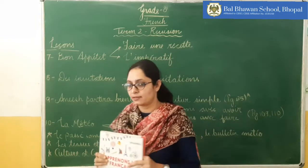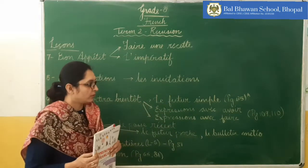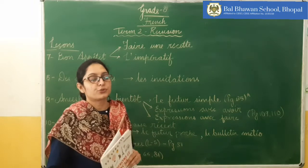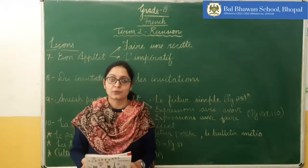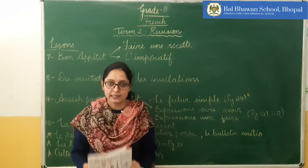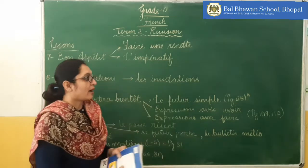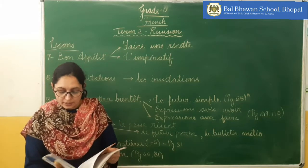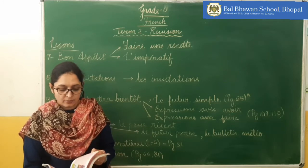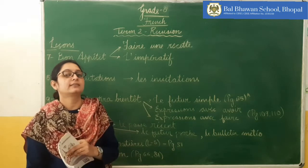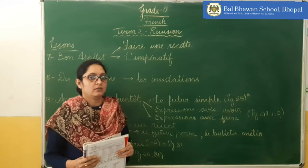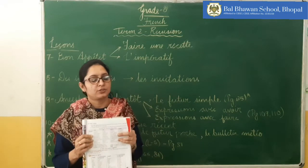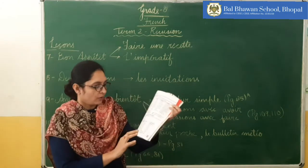Next, we have learned a very important tense — the future tense, the simple future. For example: I will go, I will eat, I will read. For this, you have to refer to page number 85 of your book, where the conjugation table is given in a beautiful manner. If you learn this table, you will definitely be able to do the questions related to the simple future.